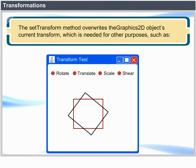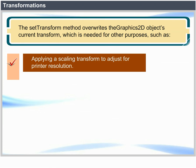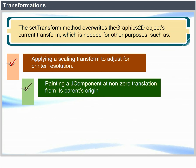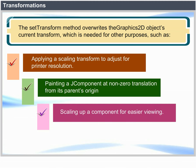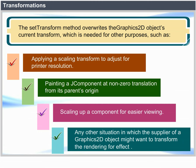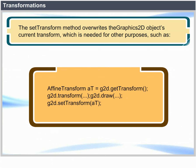The setTransform method overrides a Graphics2D object's current transform, which is needed for other purposes such as: applying a scaling transform to adjust for printer resolution, painting a JComponent at non-zero translation from its parent's origin, scaling up a component for easier viewing, or any other situation in which the supplier of a Graphics2D object wants to transform rendering for effect. Example: AffineTransform at = g2d.getTransform(); g2d.transform(...); g2d.draw(...); g2d.setTransform(at).